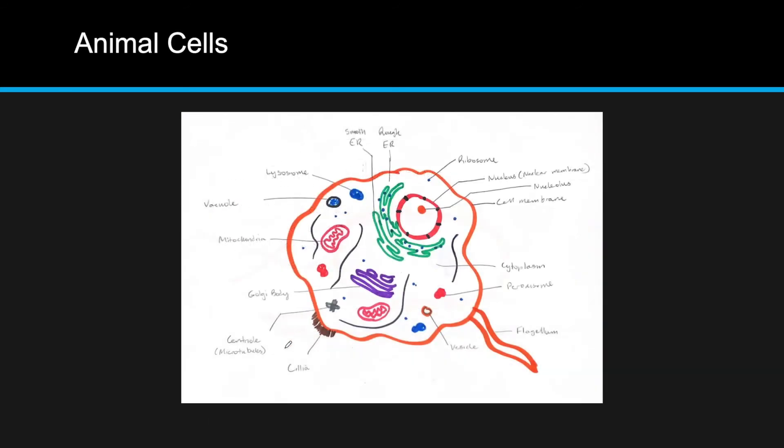So, this is just a picture of an animal cell here. You'll notice the rough ER, the smooth ER, the nucleus, the mitochondria over here, and just the various organelles.